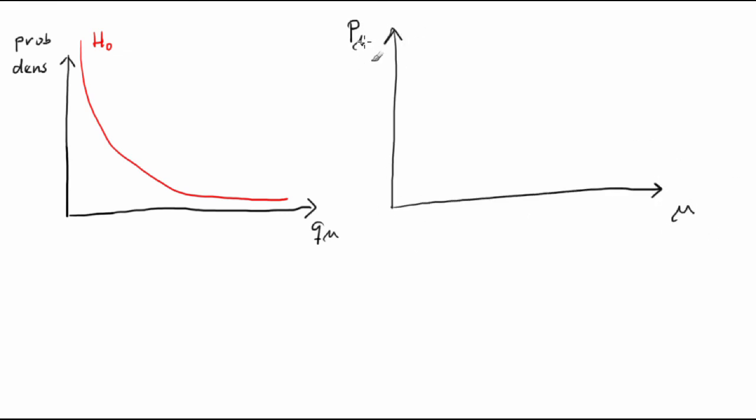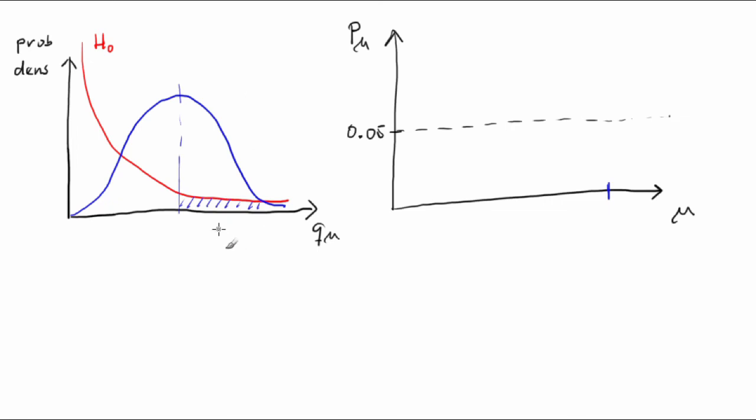Unfortunately, we drift towards this regime when calculating upper limits on mu. We test lower and lower values of mu until we find such mu for which p-sub-mu is equal to alpha.